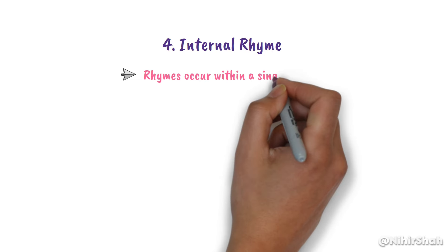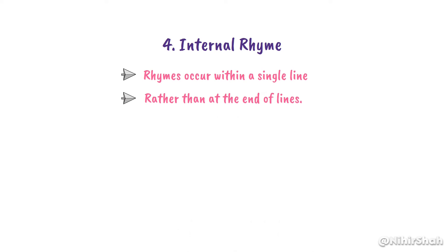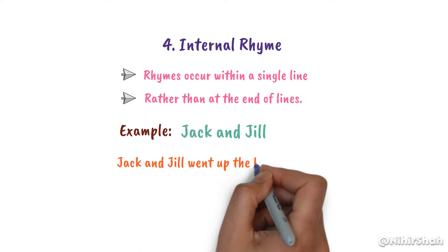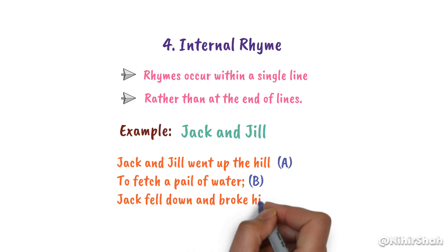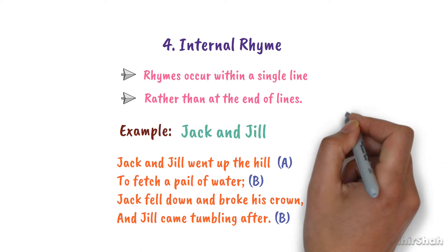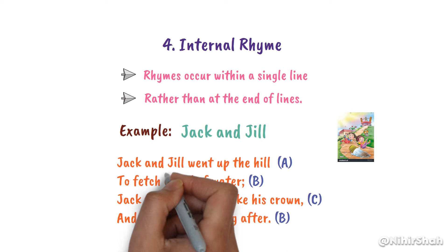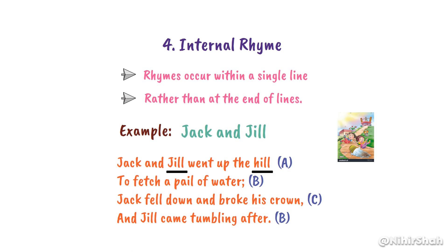Number 4, Internal Rhyme. Here, rhymes occur within a single line rather than at the end of lines. For example: 'Jack and Jill went up the hill to fetch a pail of water. Jack fell down and broke his crown and Jill came tumbling after.' Here, 'Jill' and 'hill' rhyme within the same line, as do 'down' and 'crown'.